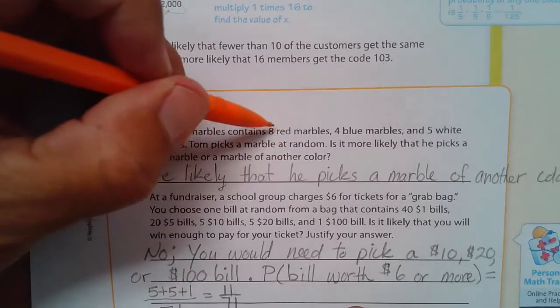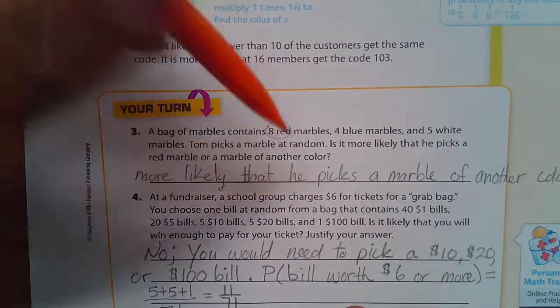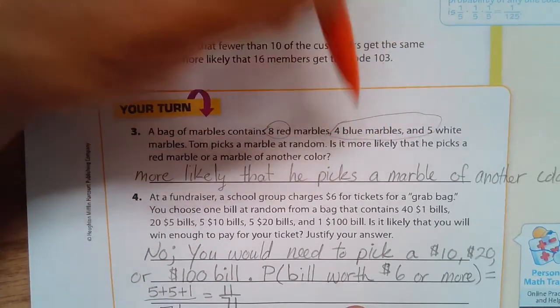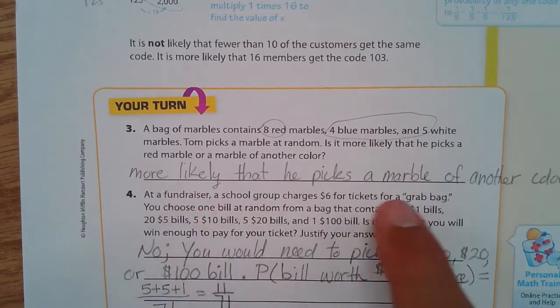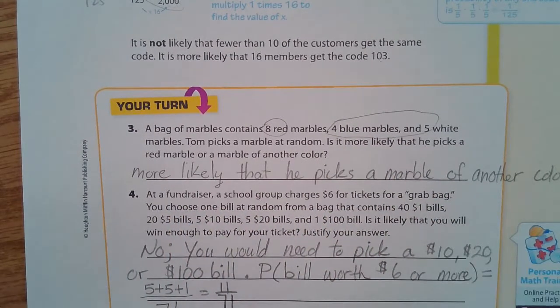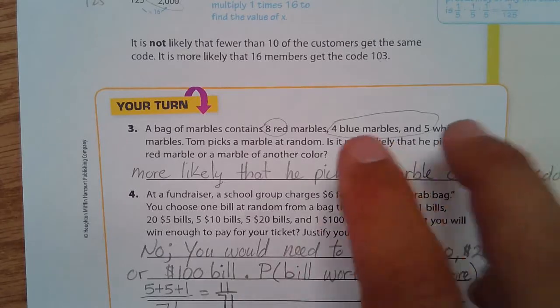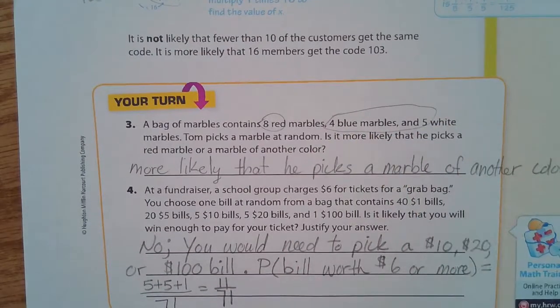Well, what we could do is we can see that there's eight red and there's nine. I mean, that's super simple. There's eight that are red and there's nine that are another color. So it looks like, yeah, it's more likely he's going to pick a marble of another color. I mean, we don't even have to do any complicated math here. There's just more of them that are not red. There you go.